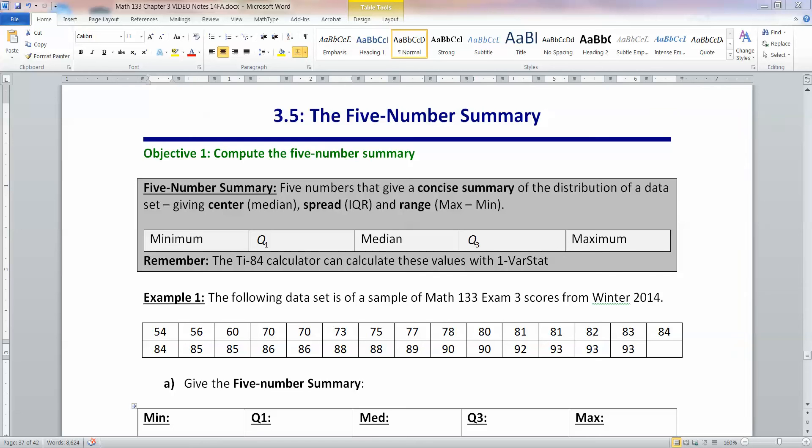In section 3.4, we learned about Q1 and Q3, the first quartile and the third quartile. And together with the median, the minimum, and the maximum, these numbers form the five-number summary.